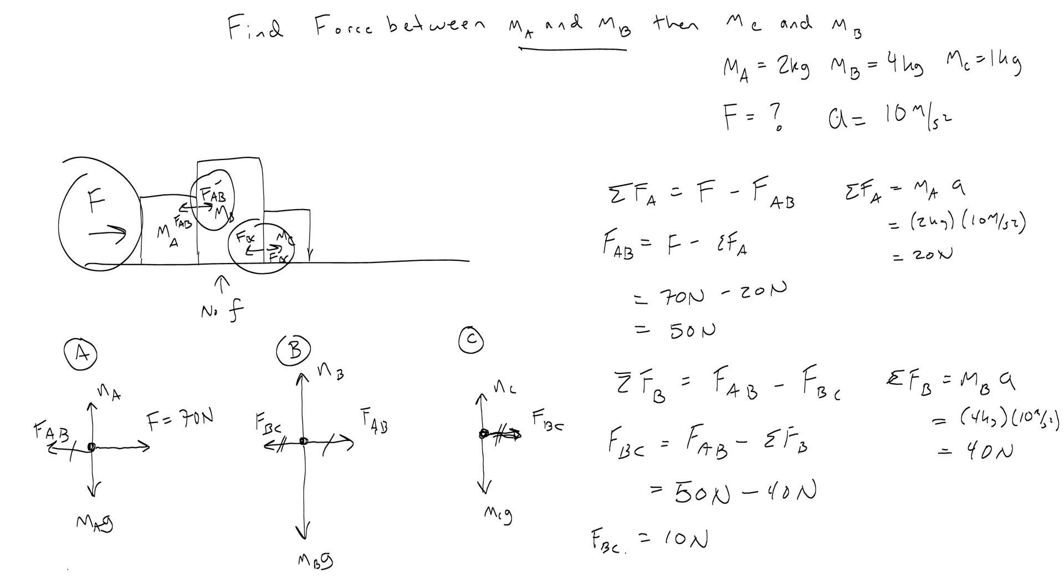Now, a quicker way to get to that number would actually be to just consider the net force on C, because it's just FBC. And so you know FBC is the mass of C times the acceleration, or 1 kilogram times 10 meters per second squared, which is 10 newtons. Physics is real. Alright, say goodbye. Bye.